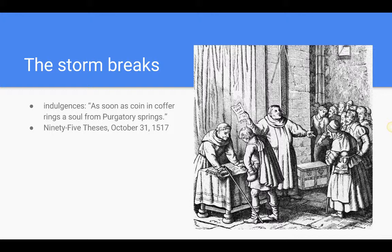Now indulgence sales were especially profitable in Germany, where there was no strong central government to stop the church from taking money out of the country. This greatly angered many Germans and made them more ready to listen to criticism of the church. Now the church's agent for selling indulgences in Brandenburg in northern Germany, John Tetzel, used some highly questionable methods. He reportedly told local priests that these indulgences would relieve them of guilt for sins they wished to commit in the future, and that the surrounding hills would turn to silver. He even had a little jingle, much like a commercial: 'As soon as a coin in the coffer rings, a soul from purgatory springs.'